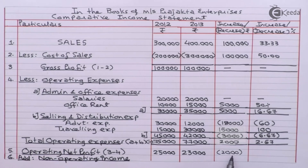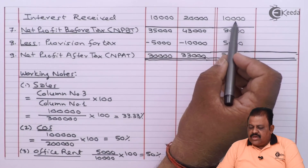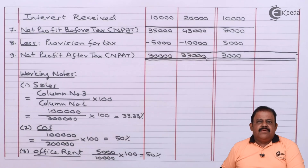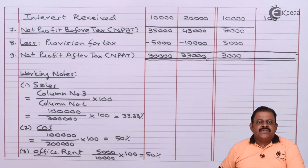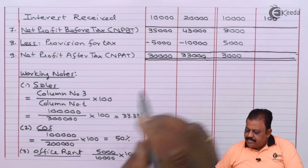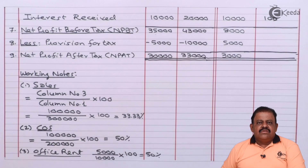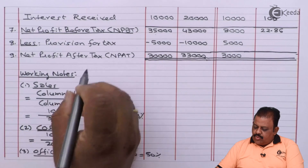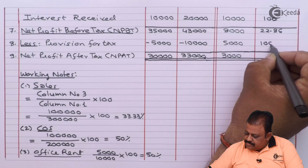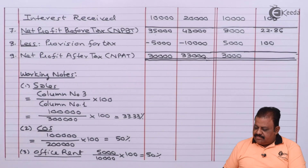Operating net profit: 2,000 divided by 25,000 multiplied by 100 = 8%. Interest received: 10,000 divided by 10,000 multiplied by 100 = 100%. Net profit before tax: 8,000 divided by 35,000 multiplied by 100 = 22.86%. Provision for tax: 100%. Net profit after tax: 10%.